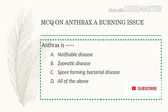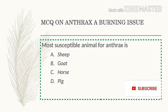Anthrax is a notifiable disease, a zoonotic disease, and a spore-forming bacterial disease — all of the above are correct. The most susceptible animal for anthrax is sheep.